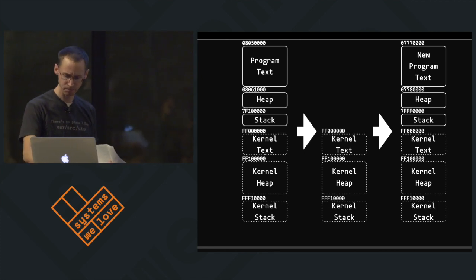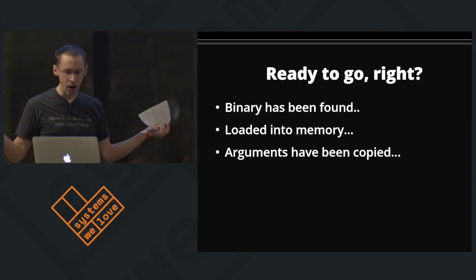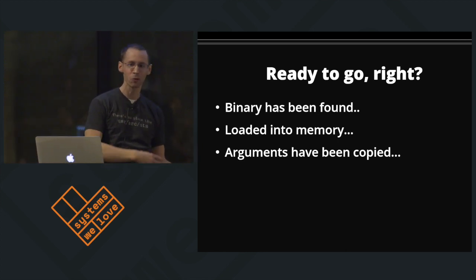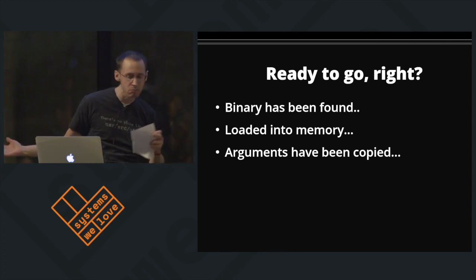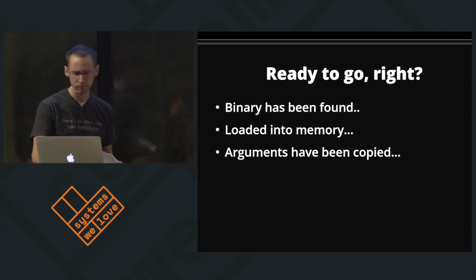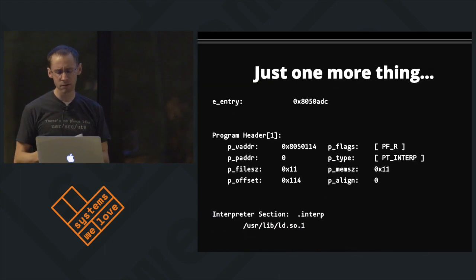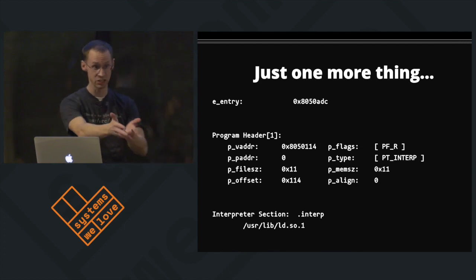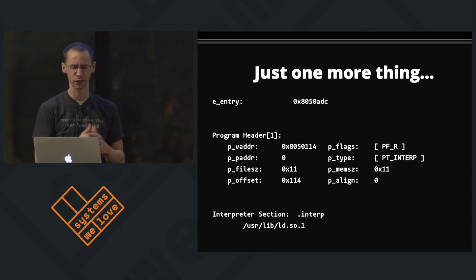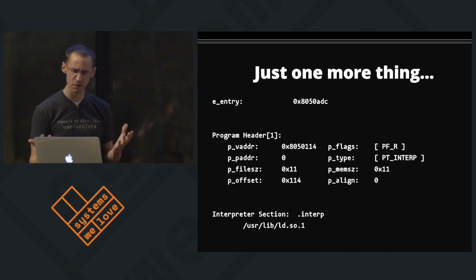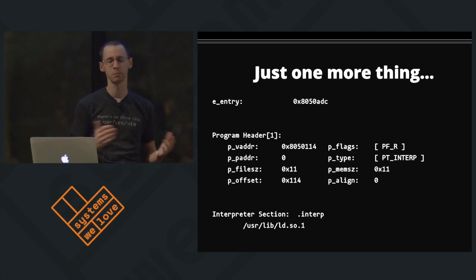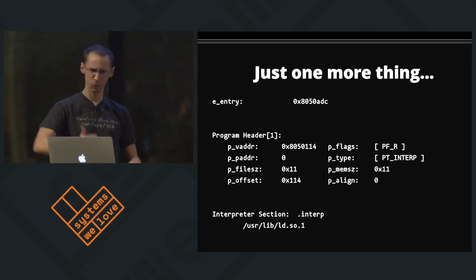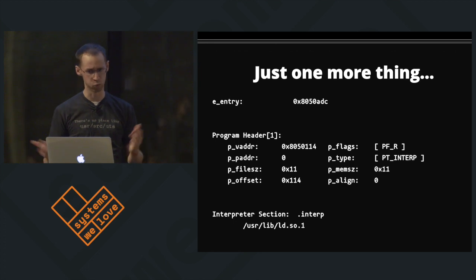So we're ready to go - we've found the binary, we've created our memory mappings, and we made sure to copy the arguments before we threw the old address space away. But there's one more thing: we have to look up the entry point for the system. We need to know where to jump into memory to start executing. As we're looking through the program headers, we see something else - a PT_INTERP header. An interpreter? I thought we had a binary here and were going to run machine instructions.